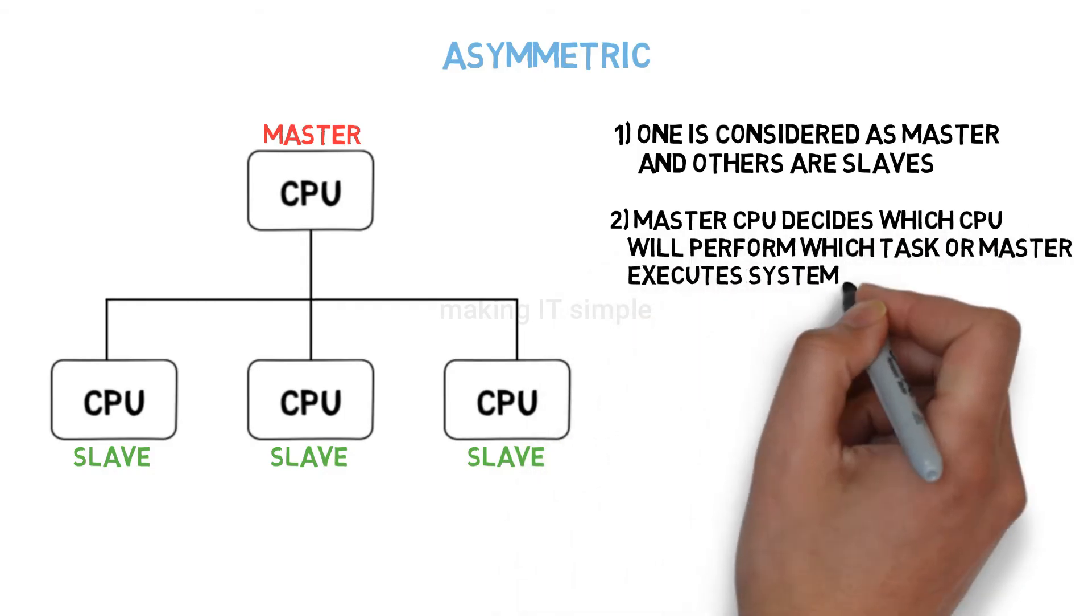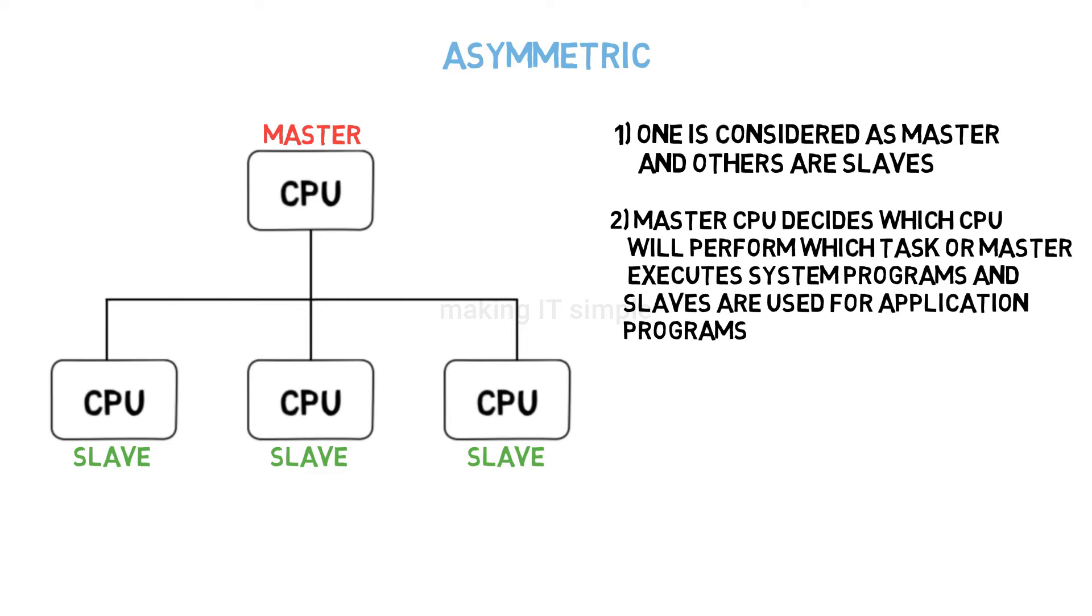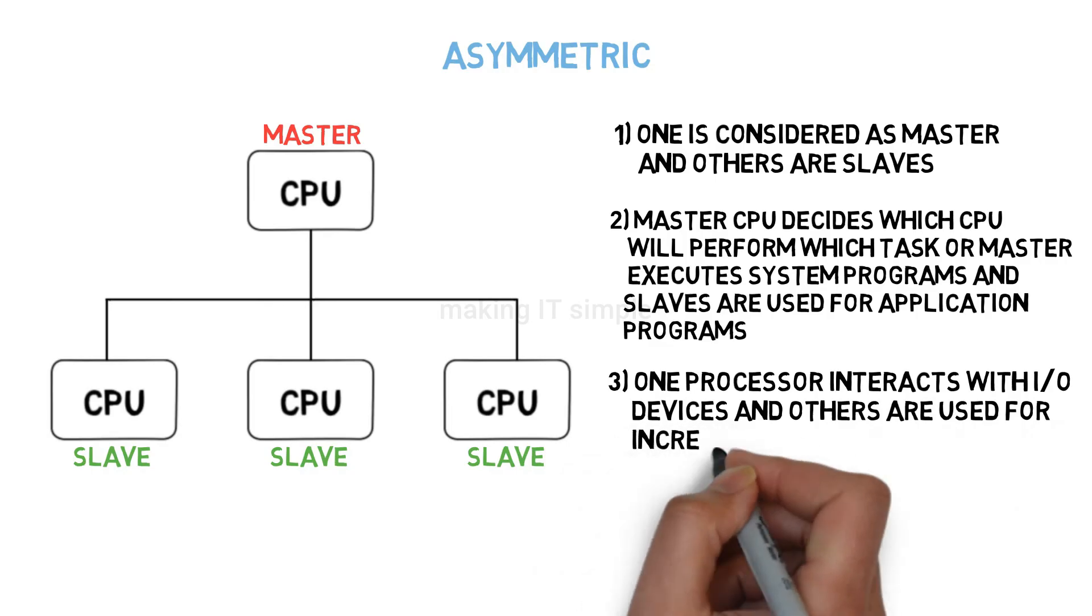Instead of giving all rights to all processors, we can make one a master and then it can decide which processor can perform which task. Many times if all processors access input-output devices or memory or any other hardware, the designing of such connections gets difficult and the production cost for circuit design also gets high. So to prevent this, one processor is assigned for all interactions with input-output or memory or other hardware devices.